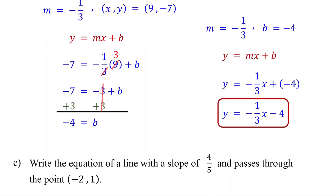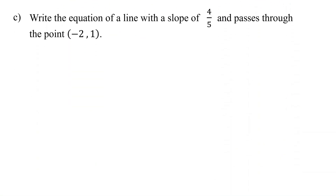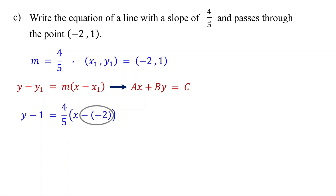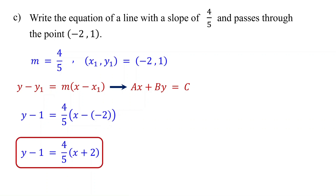Sometimes you might need to write the equation in standard form. In that case, it is easier to first write it in point-slope form, then convert it to standard form. The slope is 4 fifths and the point is negative 2, comma 1. Substitute these values into the point-slope form: replace y1 with 1, m with 4 fifths, and x1 with negative 2. Remember, subtracting a negative is the same as adding the positive. This is the equation in point-slope form.